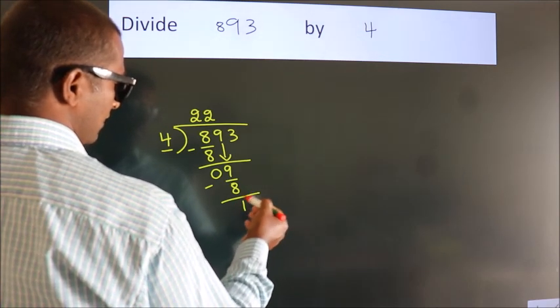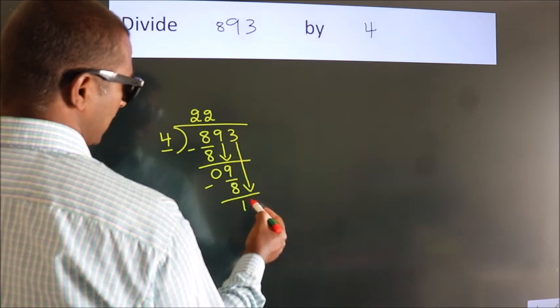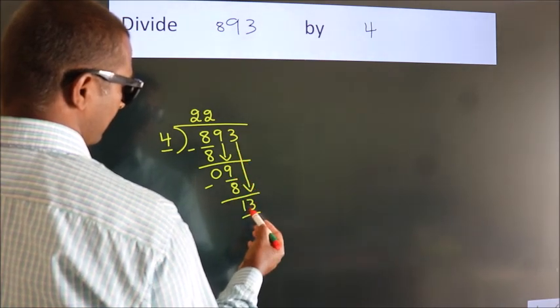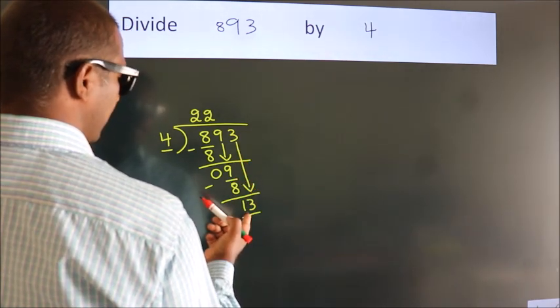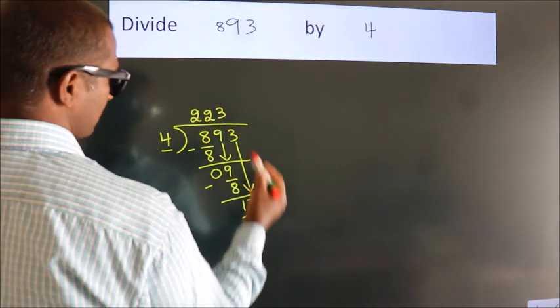After this, bring down the next number. 3 down, so 13. A number close to 13 in the 4 table is 4 threes, 12.